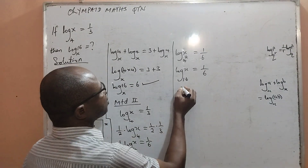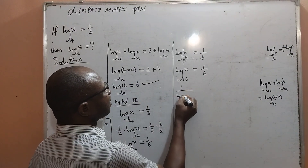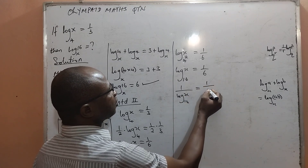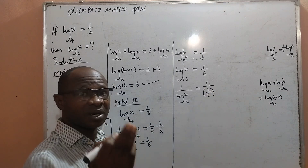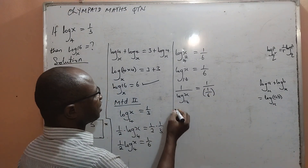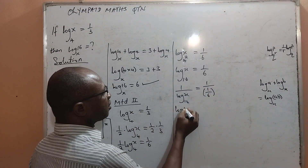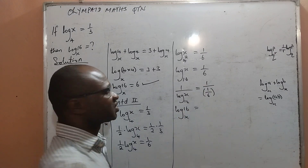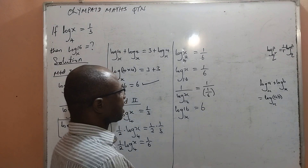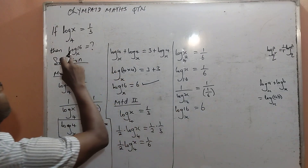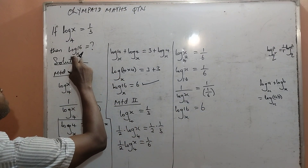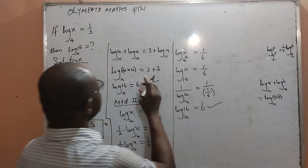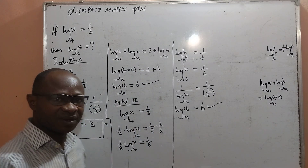Now I can take the reciprocal of both sides: 1 over log x base 16 equals 1 over (1/6). The reciprocal of the left hand side becomes log 16 base x, and the reciprocal of the right hand side gives me 6. So log 16 base x equals 6, exactly as we got it using the first method.